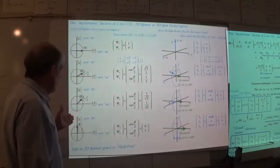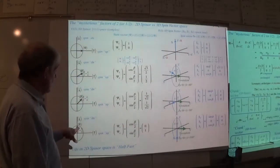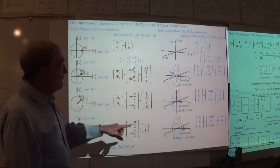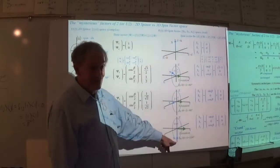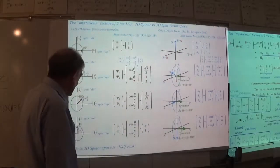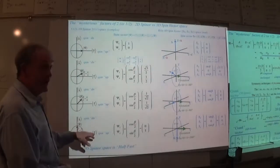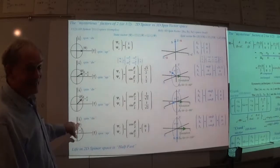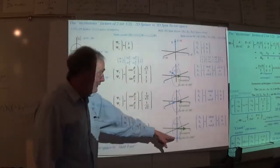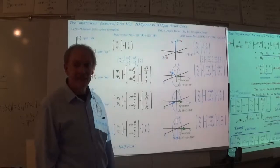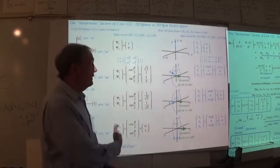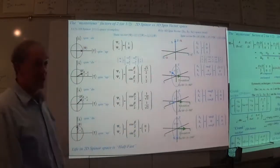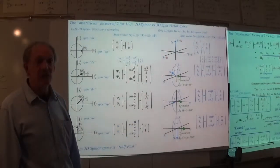As I crank up to pi over 6 — 30 degrees — this 3D vector is already up to pi over 3, 60 degrees away from spin up. This 3D vector is going twice as fast as this spinner, and that's weird. Take it to the bottom where I go just 90 degrees in the spinner and I have made spin down.